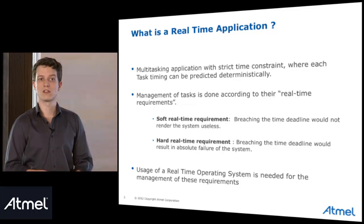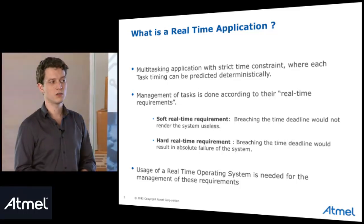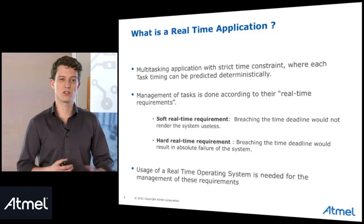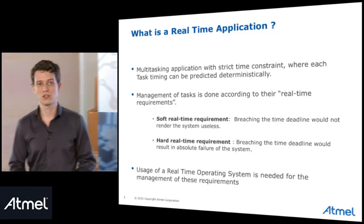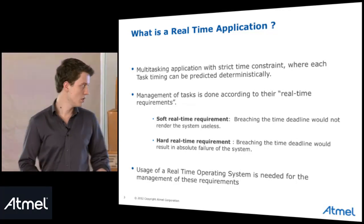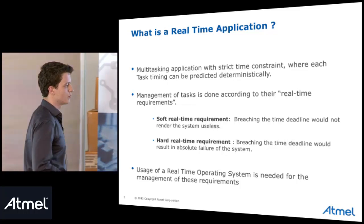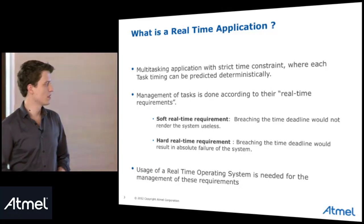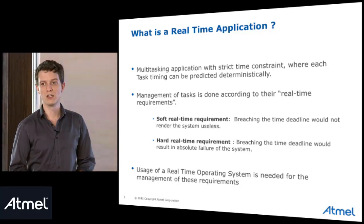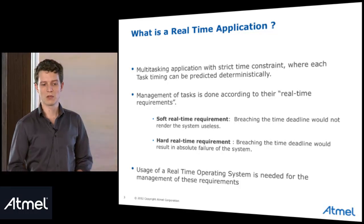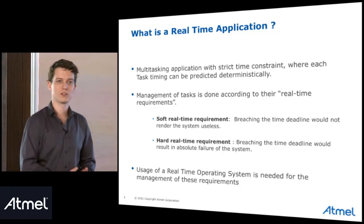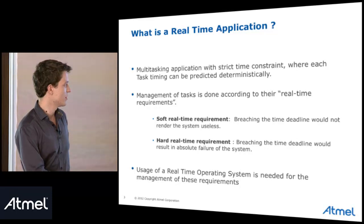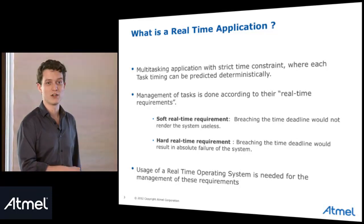For example, it's a keyboard task. If it takes three or four seconds to display something after you hit a key, it will just be a laggy application — it will take time but it will not be useless. The second kind of task is the hard real-time requirement task. In those tasks, breaching the time deadline will result in what we call an absolute failure. For example, an airbag system: if a crash occurs and the airbag deploys just four seconds later, it's too late — that's truly an absolute failure.